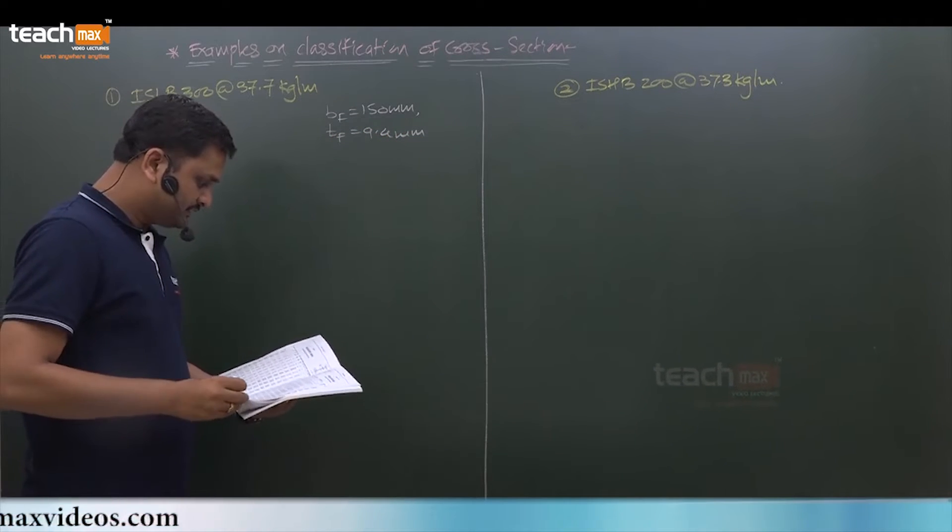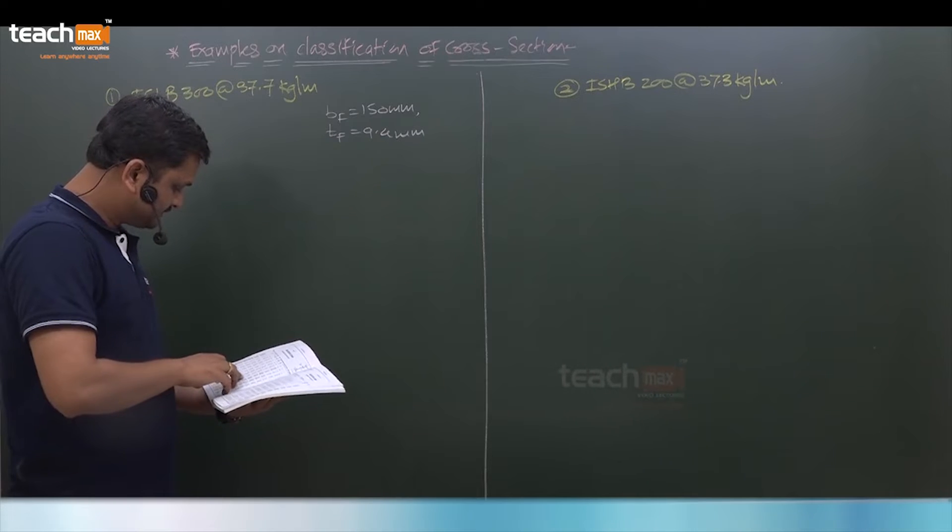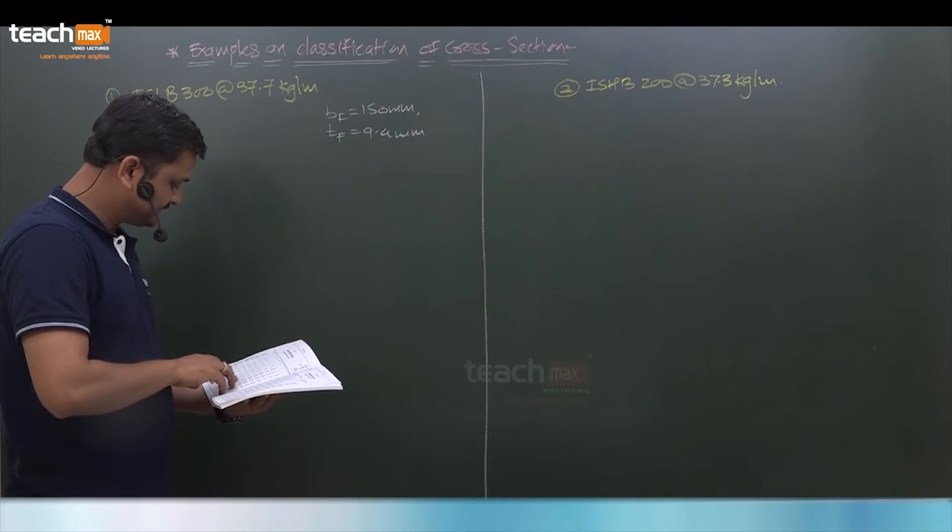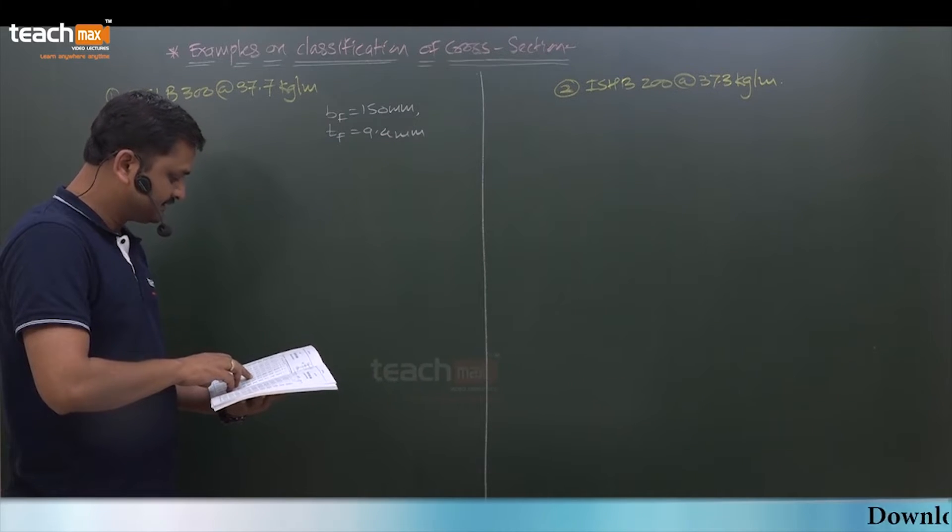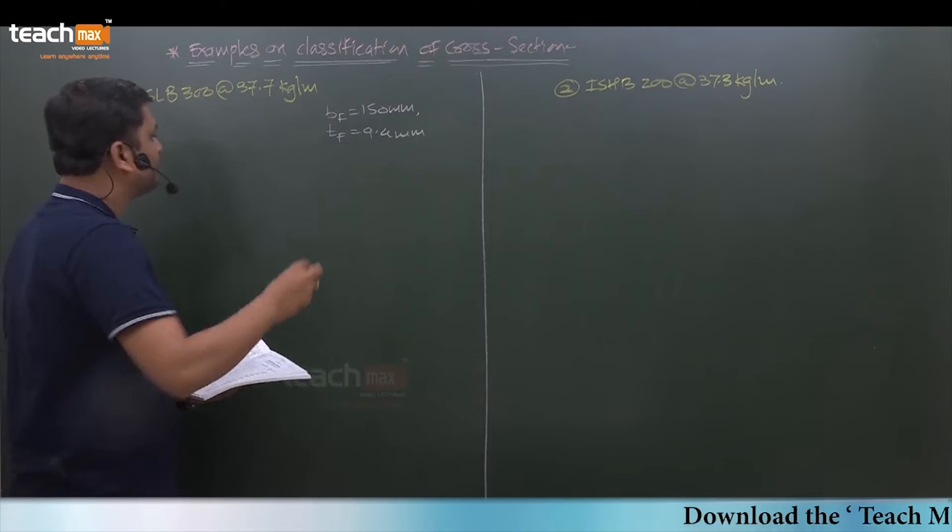Then thickness of web is also required. Thickness of web for ISLB 300 is 6.7 mm.